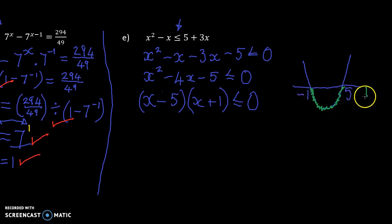So less than zero would be below that line. So now we can see that actually the function between negative 1 and 5 is where it's less than zero. It has a value of less than zero. And that's our answer.